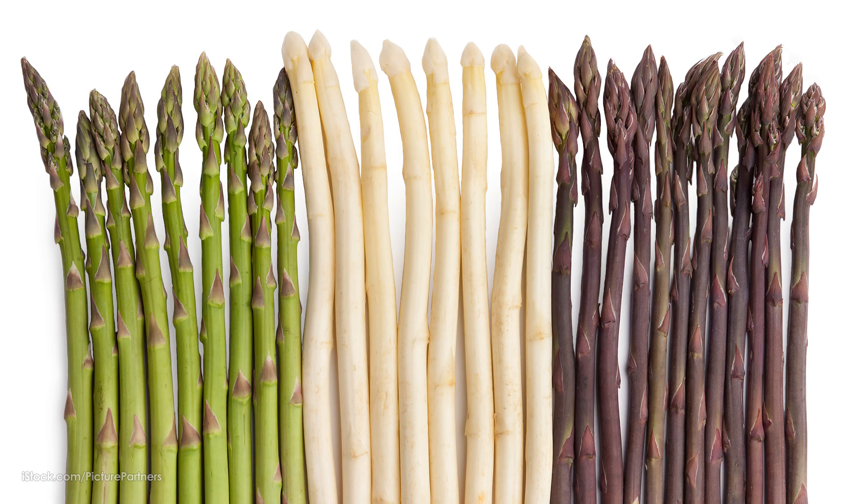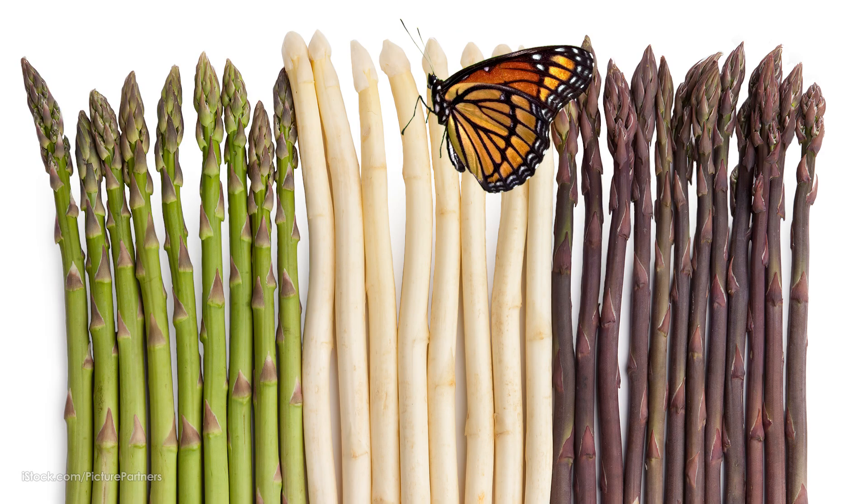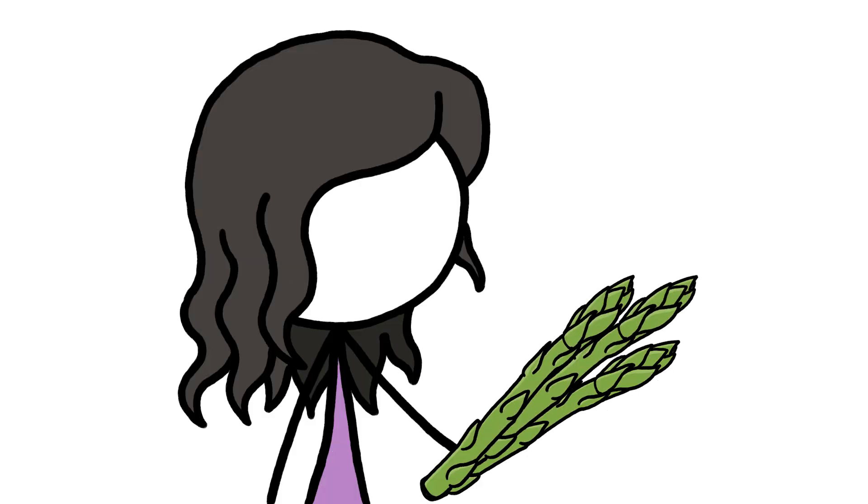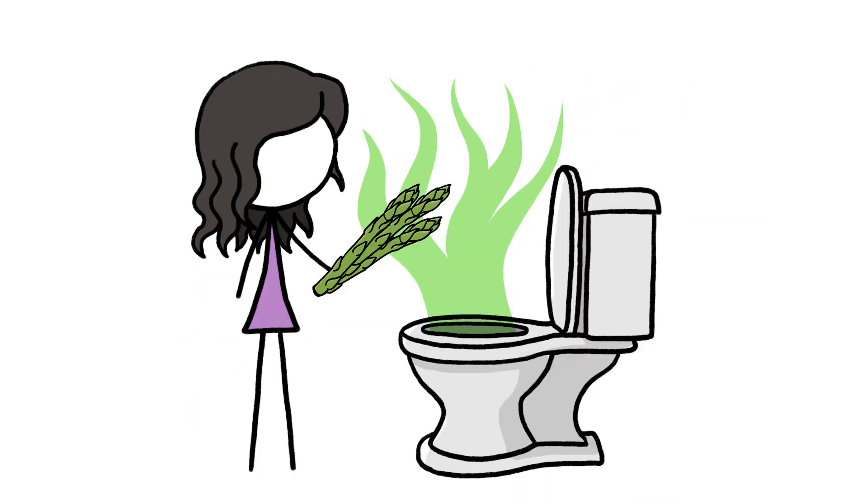Asparagus is a green, white, or purple spike of a vegetable that heralds spring, goes well with eggs, and gives a really weird smell to your pee.